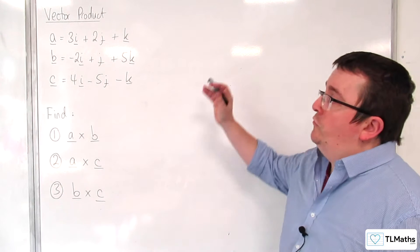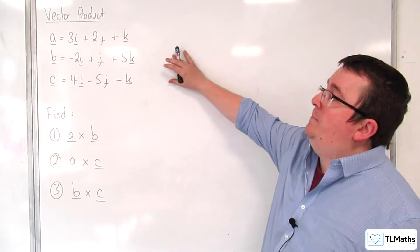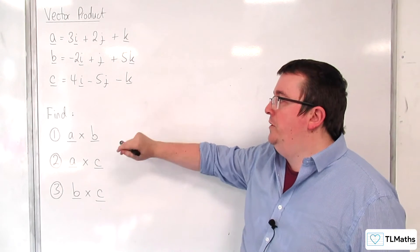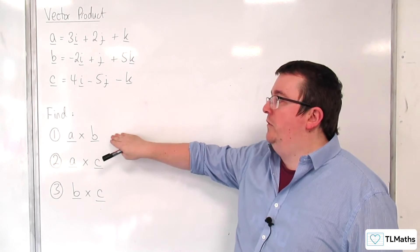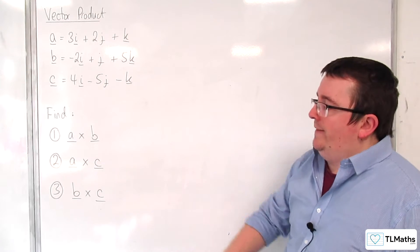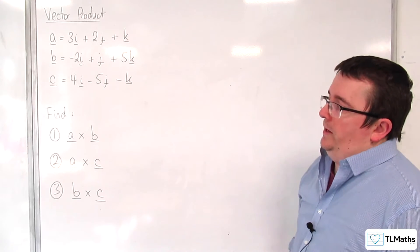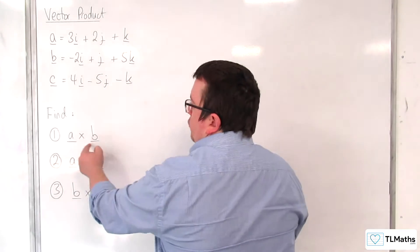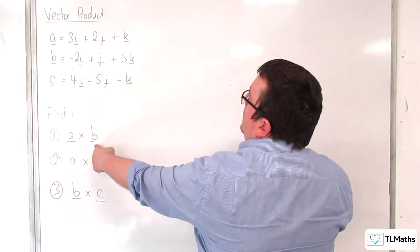In this video we have three vectors A, B, and C. We need to find the cross product of A and B, then A and C, and then B and C. So let's start with A cross B.